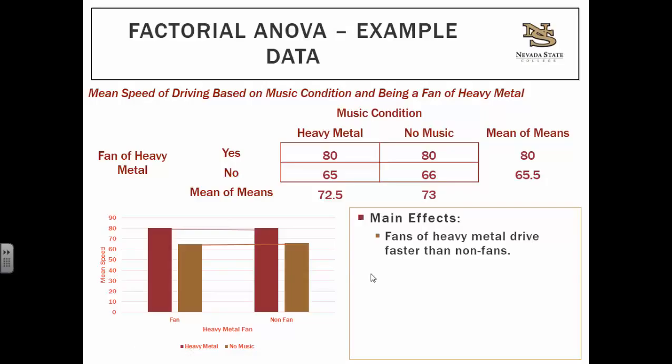That is basically all you need to know about factorial ANOVA to survive in this class. The calculations can get very complex, and there are full hypothesis tests available if you want to read further in your chapter. But I just want to introduce you to it because it's a commonly used tool — it's very useful because you can look at the effect of two independent variables at once.